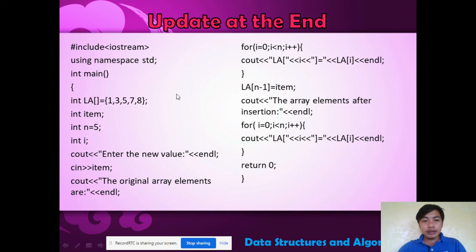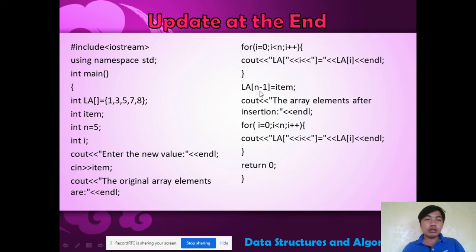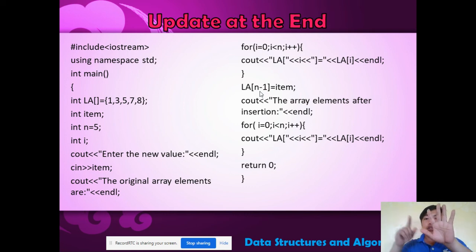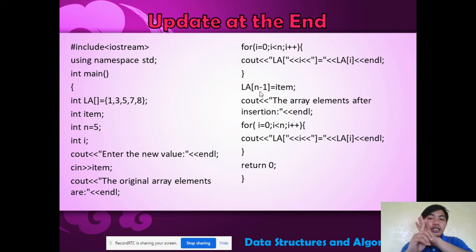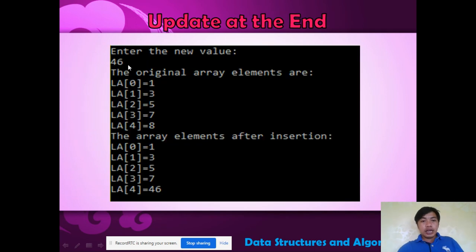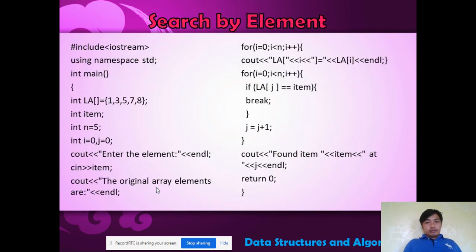Update at the end: n equals 5. Print the original array. Then LA[n-1] is assigned the new item — n-1 because the array has 5 elements (indices 0 through 4), so index 4 is the last. Enter the new value, 46. The original array is 1, 3, 5, 7, 8. After updating, 46 is placed at the end.